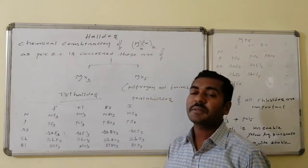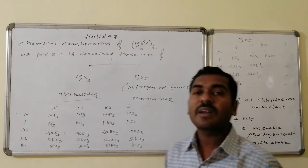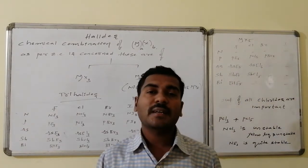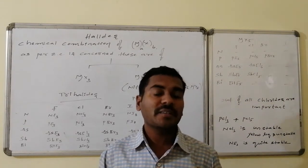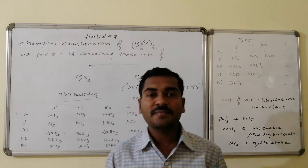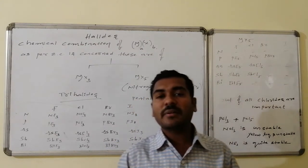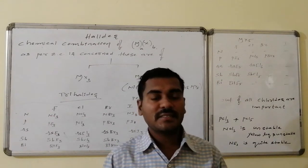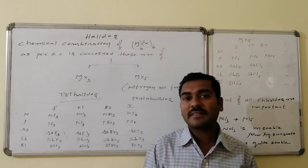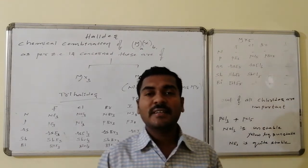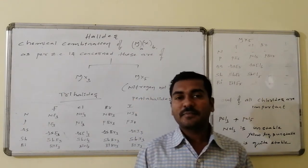There are different varieties of halides, but out of these halides, as per the electronic configuration is concerned, there are two varieties of important oxidation states. One is the plus 3 oxidation state and the second one is the plus 5 oxidation state.